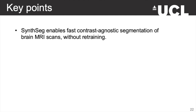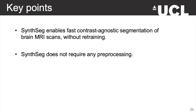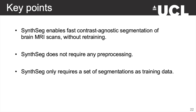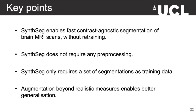Let us go over some key points from this presentation. First, we have achieved fast contrast-agnostic segmentation of brain MRI scans without having to retrain for any new modality. SynthSeg doesn't require pre-processing and can adapt to images pre-processed at different levels. Also, the model only requires a set of anatomical segmentations and doesn't need any images to be trained. In agreement with several recent papers, we show that augmenting training data beyond realistic measures helps the network to better generalize at test time.